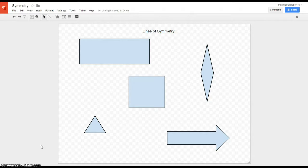So there are multiple lines of symmetry for one shape, or some shapes may only have one line of symmetry. Some don't have any lines of symmetry at all.